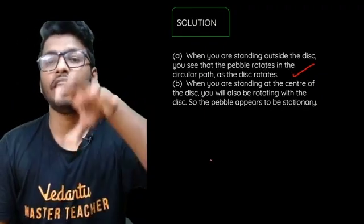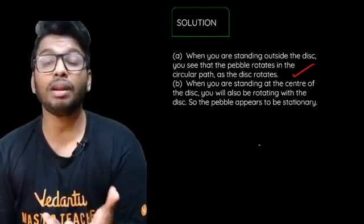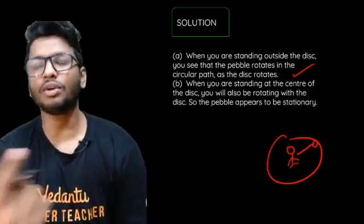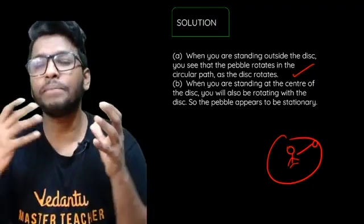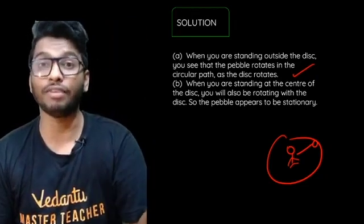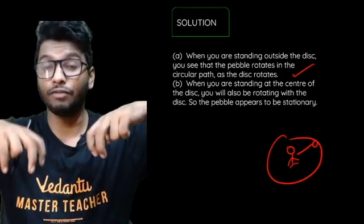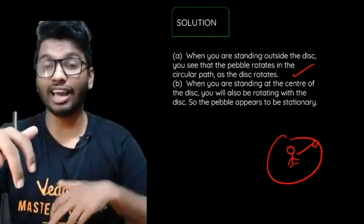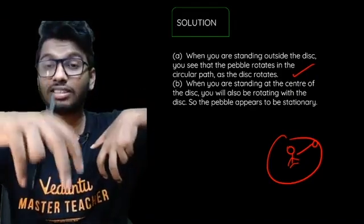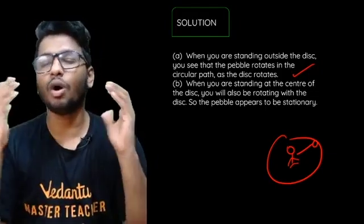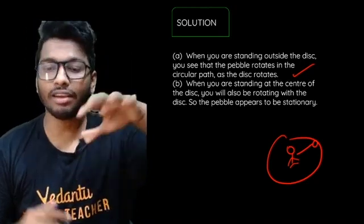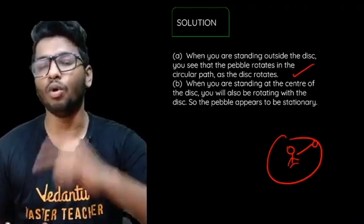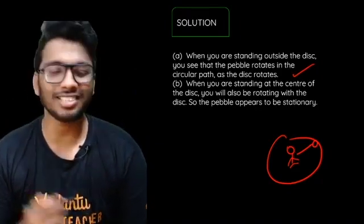When you're standing at the center of the disc, the pebble appears to be stationary. Why? Because when you're standing at the center, you're also rotating along with the pebble. Since you're rotating together, for you the pebble appears to be at rest. This is like two friends sitting in a moving train — for each other they appear stationary, but for someone outside the train, both are in motion. It's all about frame of reference.